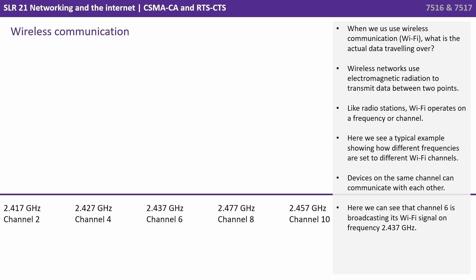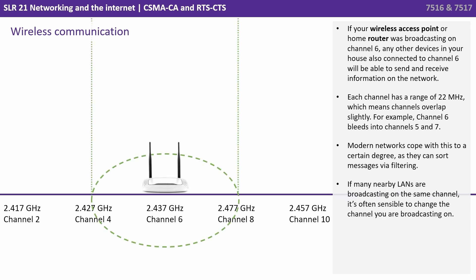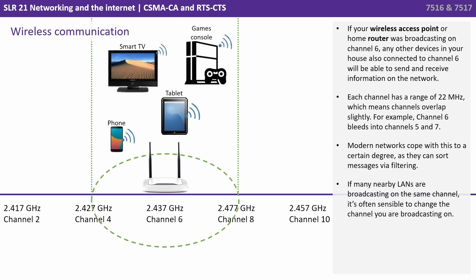Here we see a typical example showing how different frequencies are set to different Wi-Fi channels. Devices on the same channel communicate with each other. Here we can see that channel 6 is broadcasting its Wi-Fi signal on a frequency of 2.437 GHz. If your wireless access point or home router was broadcasting on channel 6, any other device in your house also connected to channel 6 will be able to send and receive information on the network.